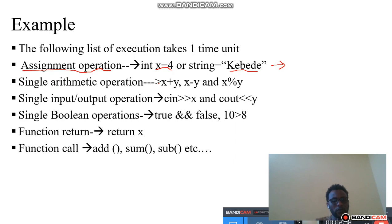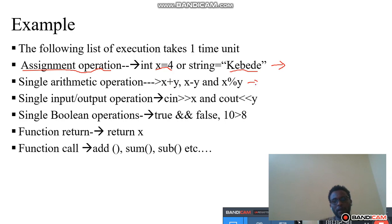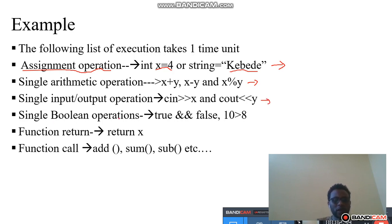Single arithmetic operations — just like int x, x minus y, x modulo y — those are examples of single arithmetic operations, and this also takes one time unit. Single input/output operations — just like cin of x and cout of y — those are examples, and they take only one time unit.